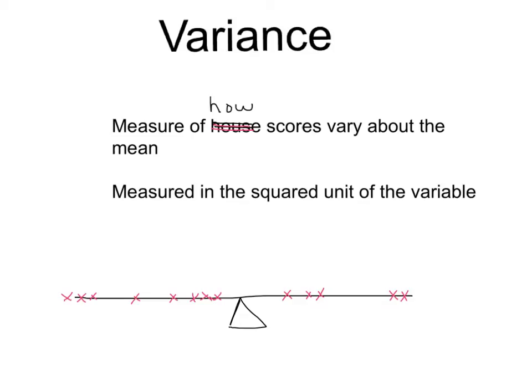So, notice I have a typo right away, but the purpose of variance is to measure how scores vary about the mean. The mean, in this case represented by the fulcrum point on my seesaw, is the central tendency. The variance is a measure of how far, on average, each of the different x values are from the mean. But the variance is going to be measured in the squared unit of the variable, which is a little bit less useful for the practitioner but extremely useful for the statistician.